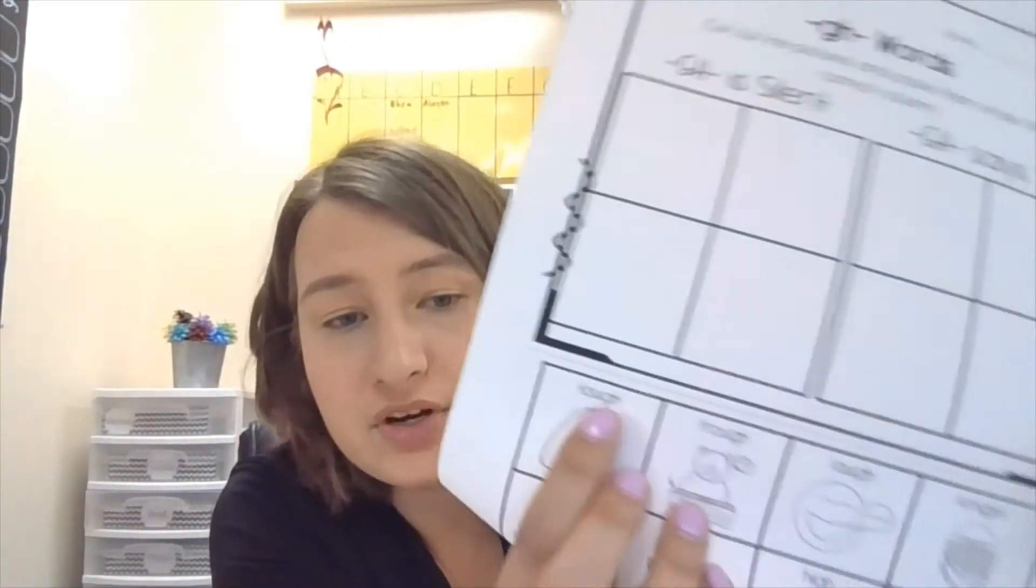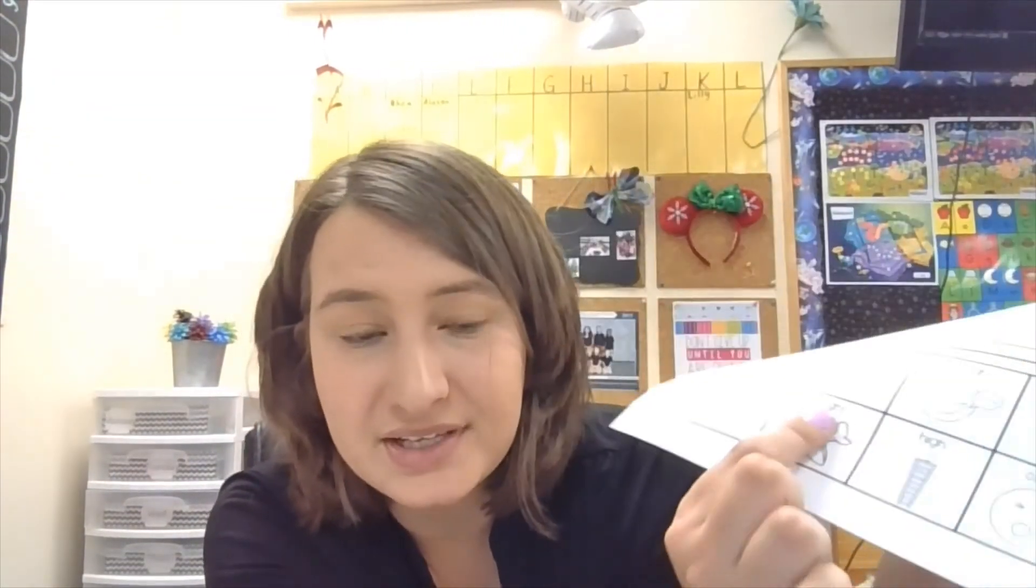You can just go ahead and look at the word. Even if you can't sound the word out, that's okay. You can just look at where the gh is. Where's the gh here? At the end, so you know it's going to say F. And this one, the gh is in the middle, so you know it's going to say nothing. So go ahead and glue those in either silent or F.